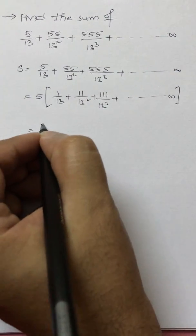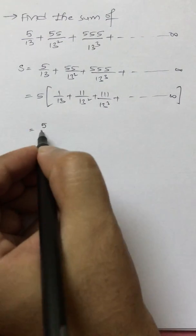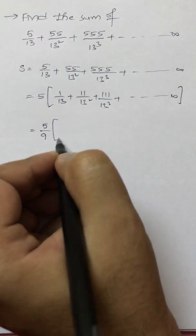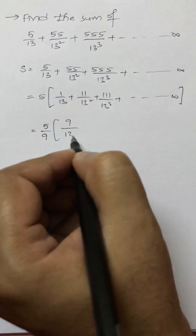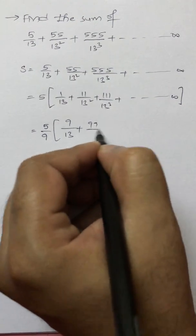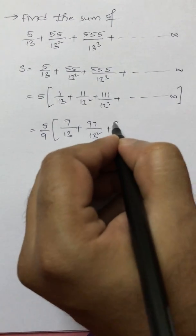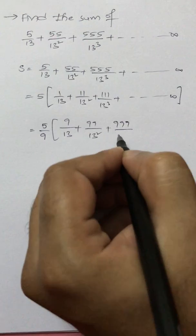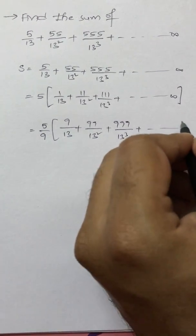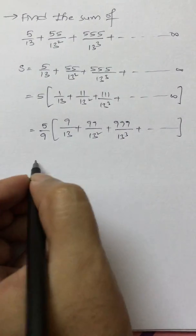Now what we do is multiply and divide by 9. If I multiply and divide by 9, we get 5/9 times [9/13 + 99/13² + 999/13³ + ... to infinity].